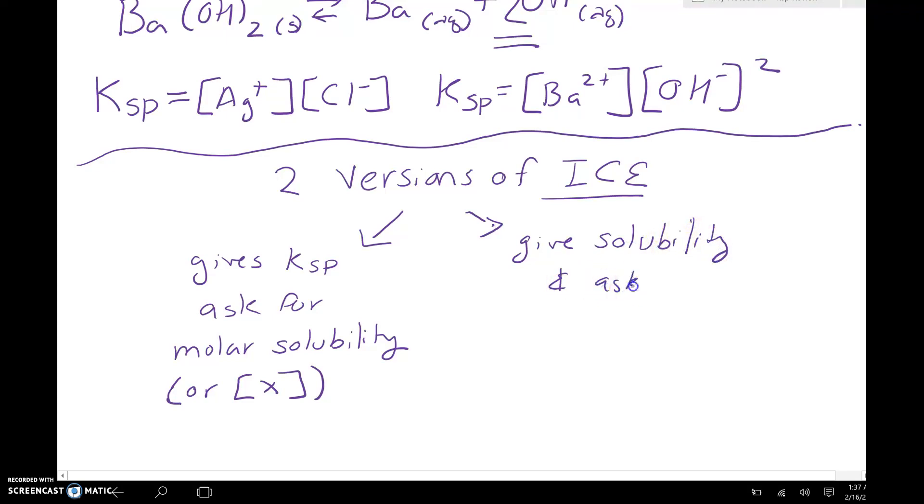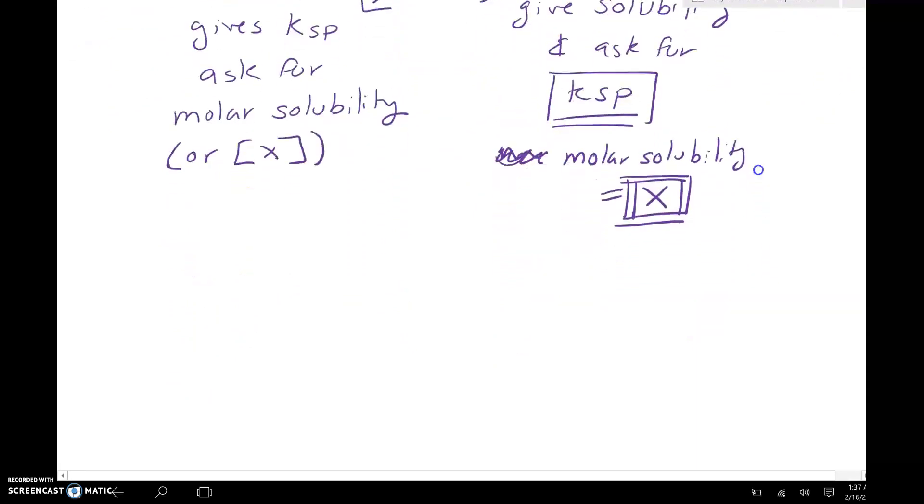The second version of ICE is going to be where they give solubility and ask for Ksp. Either we're calculating Ksp or we're calculating molar solubility. Remember that if ever they give something that they're calling molar solubility, it's always going to be that X value in an ICE table. I've said that a bunch of times over the last couple days, but I see everybody still making that mistake on their quiz. Remember that molar solubility will always be that X value.